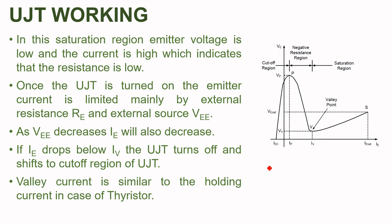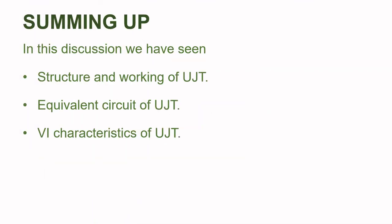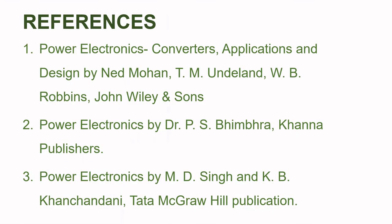The valley current is similar to the holding current in the case of a thyristor. In this discussion, we have seen the structure and working of UJT, the equivalent circuit of UJT, and the VI characteristics of UJT. These are a few references used for preparing this presentation. If you liked this video, please press the like button and subscribe to our channel for more updates. Thank you.